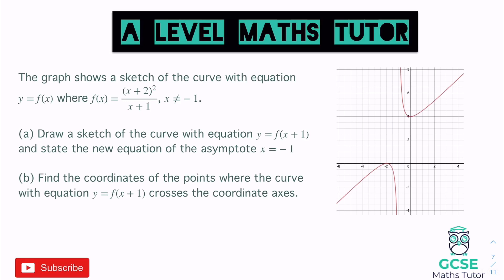For the extension question, the graph shows y = f(x) where f(x) = (x + 2)²/(x + 1) and x ≠ −1, giving asymptote x = −1. Part (a) asks to sketch y = f(x + 1) and state the new asymptote. Part (b) asks to find coordinates where the new curve crosses the axes. The equation looks more complicated, but the same transformation principles apply — pause the video and have a go.